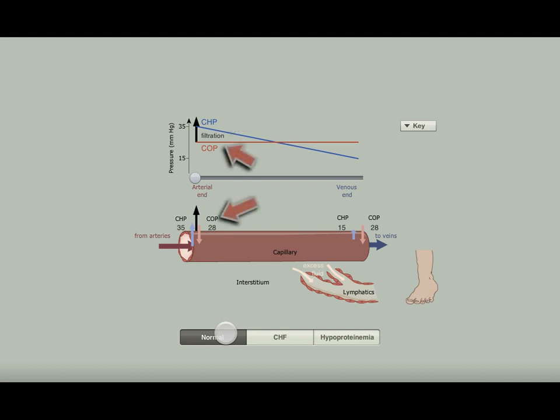Capillary oncotic pressure, shown as COP, is a force due to proteins in the circulating blood that act to draw fluid into the vessel. Representative values for typical systemic capillaries, for example skin capillaries, are shown in the diagram.